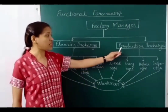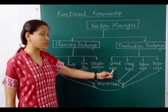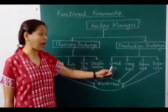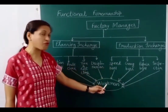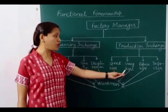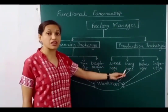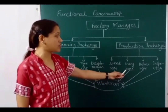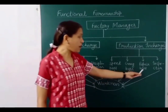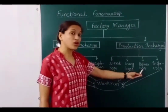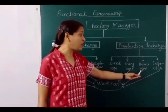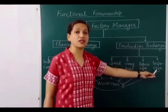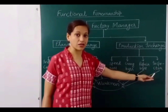Under the production in-charge, the speed boss ensures timely and accurate completion of work, the gang boss keeps machines and tools ready for operation by workers, the repair boss ensures good condition of machines and tools, and the inspector checks the quality of the product.